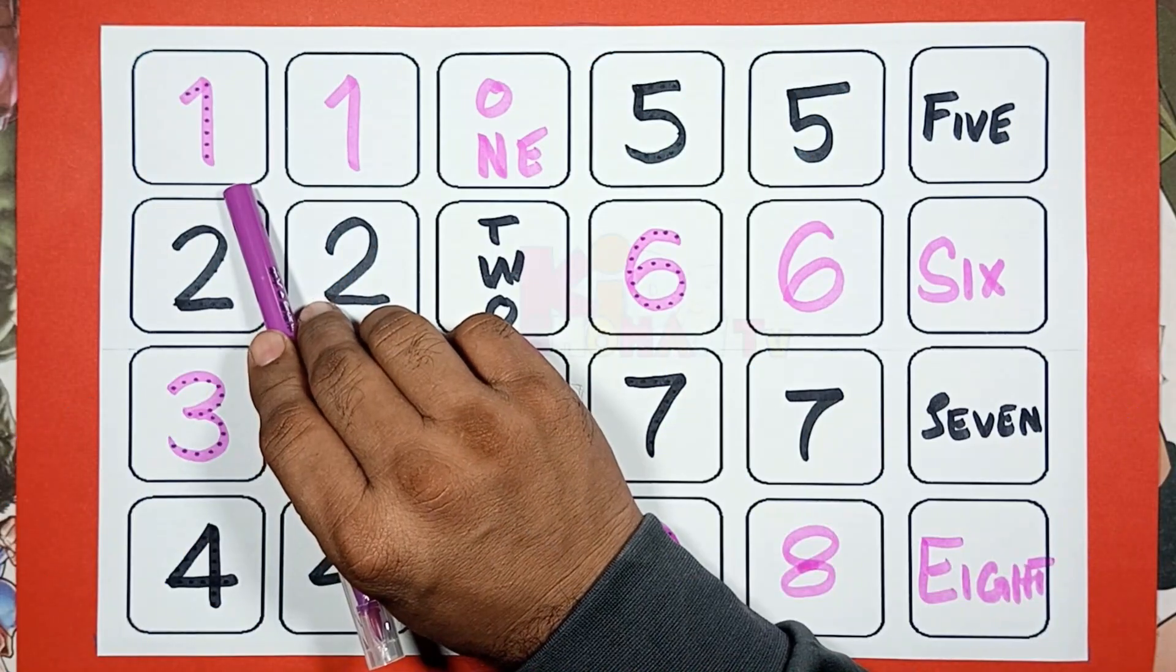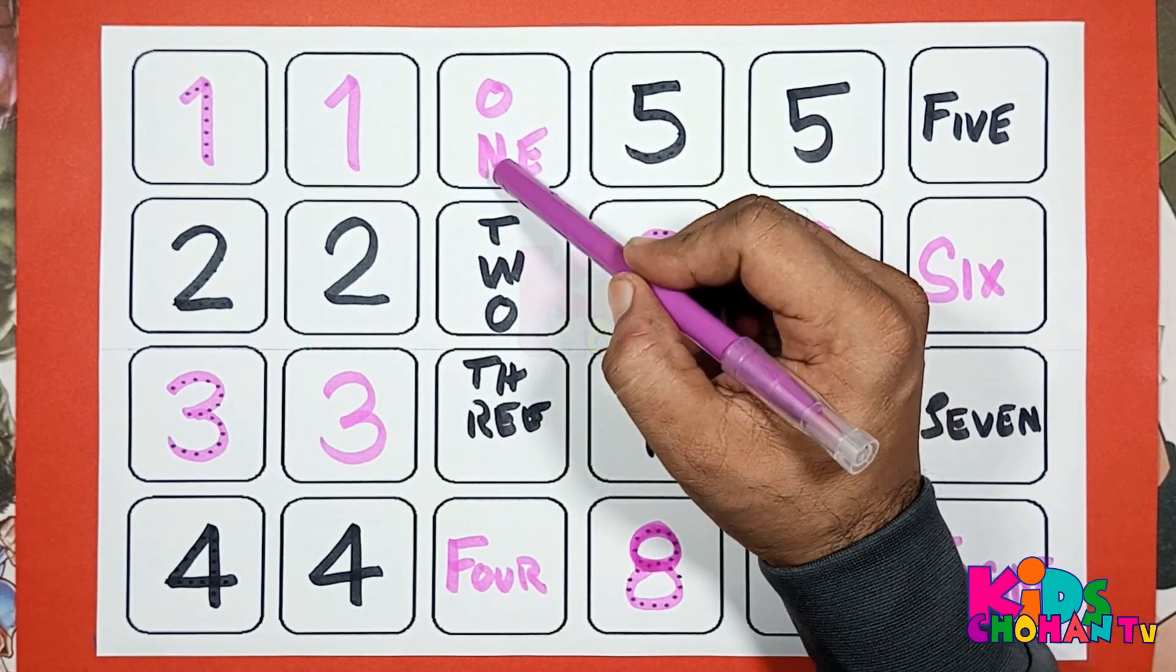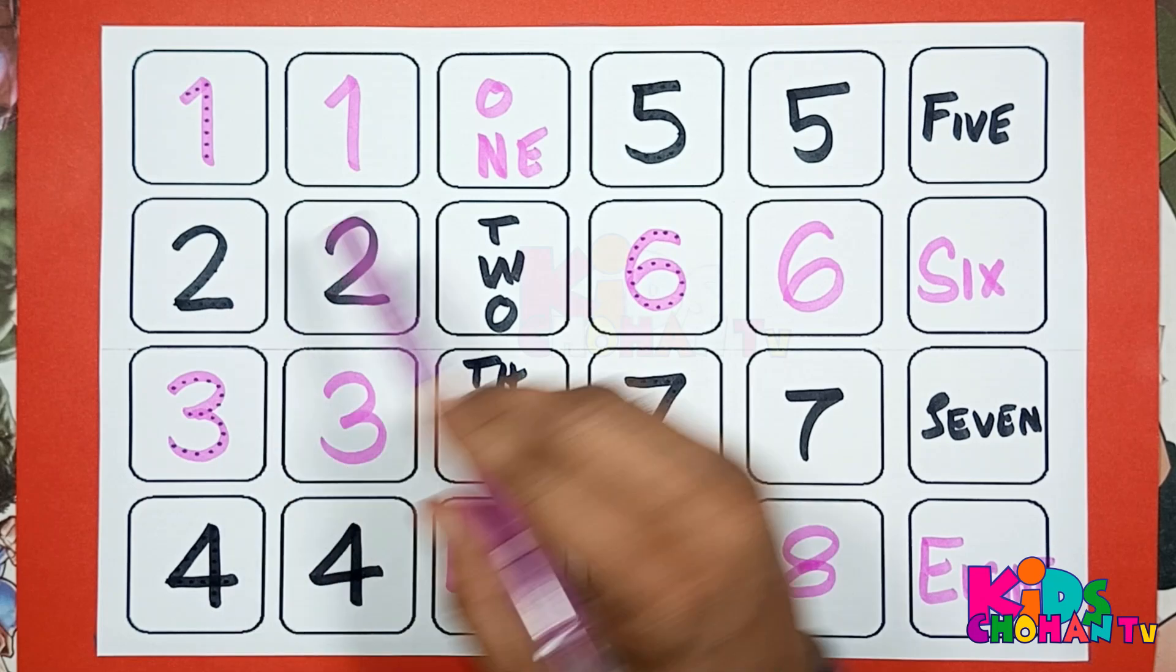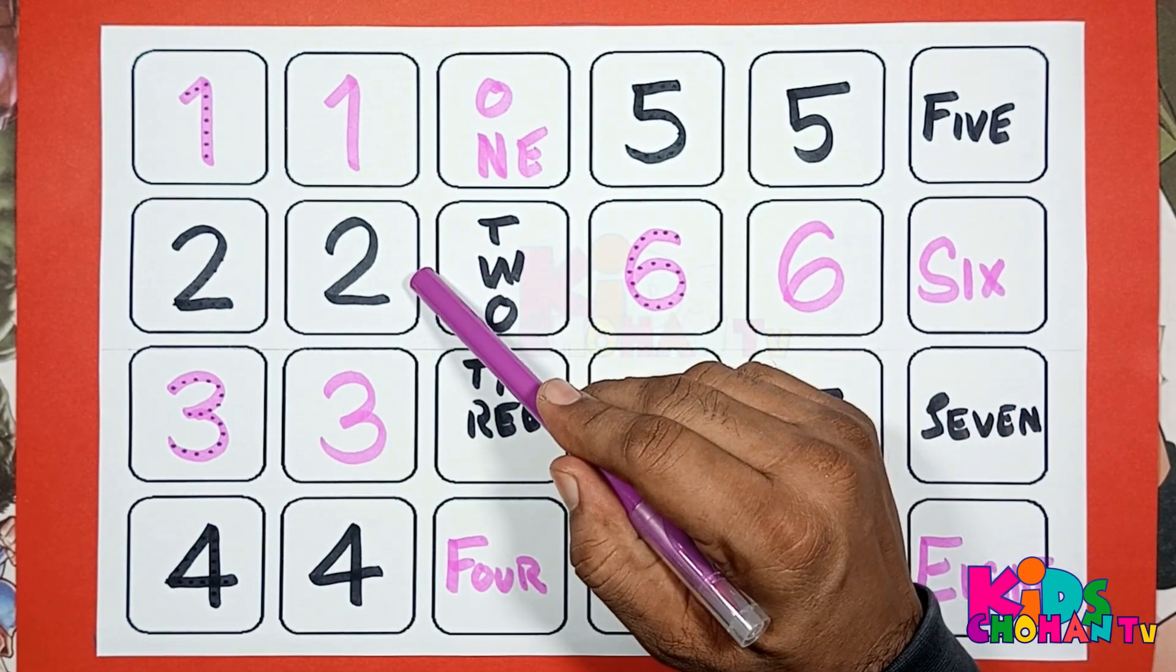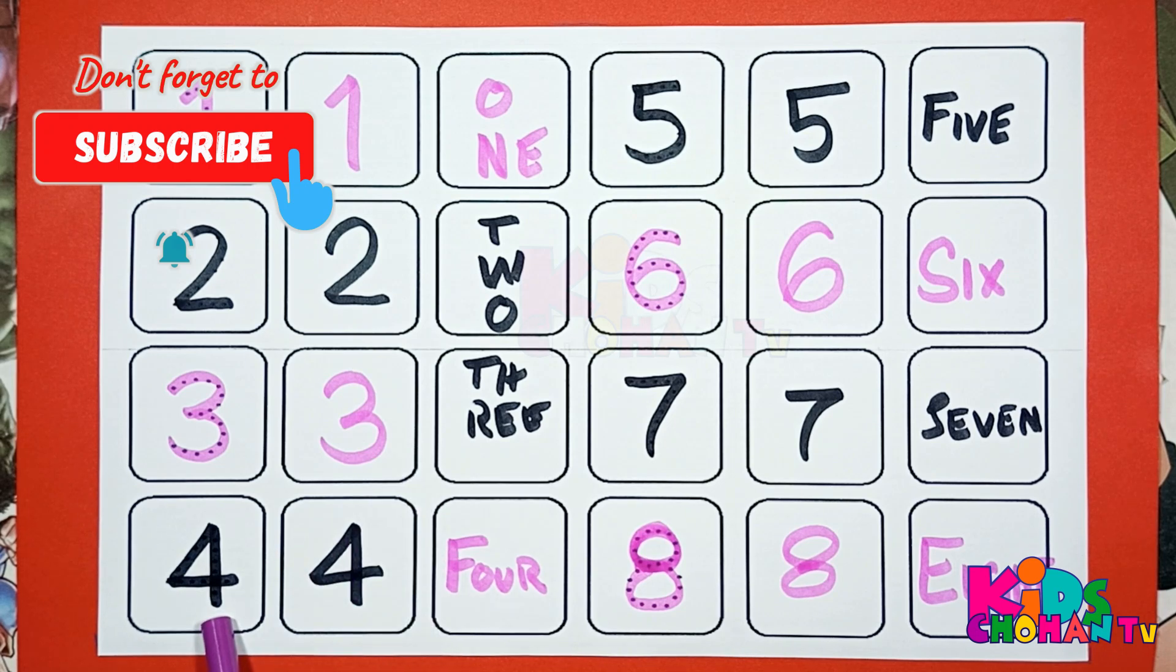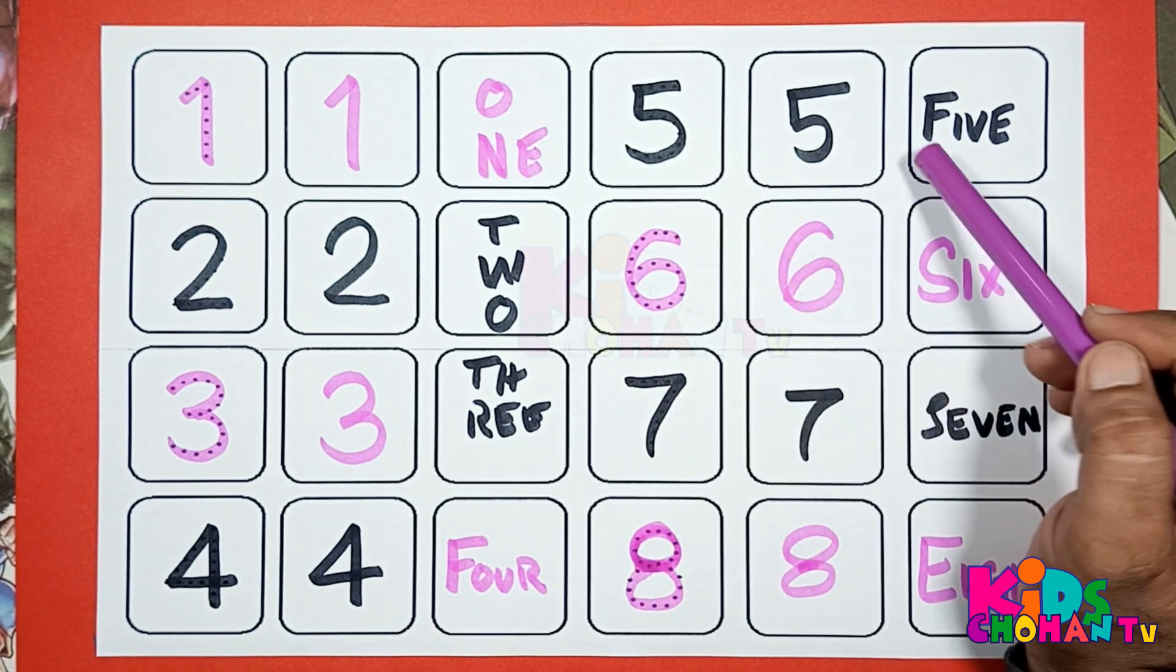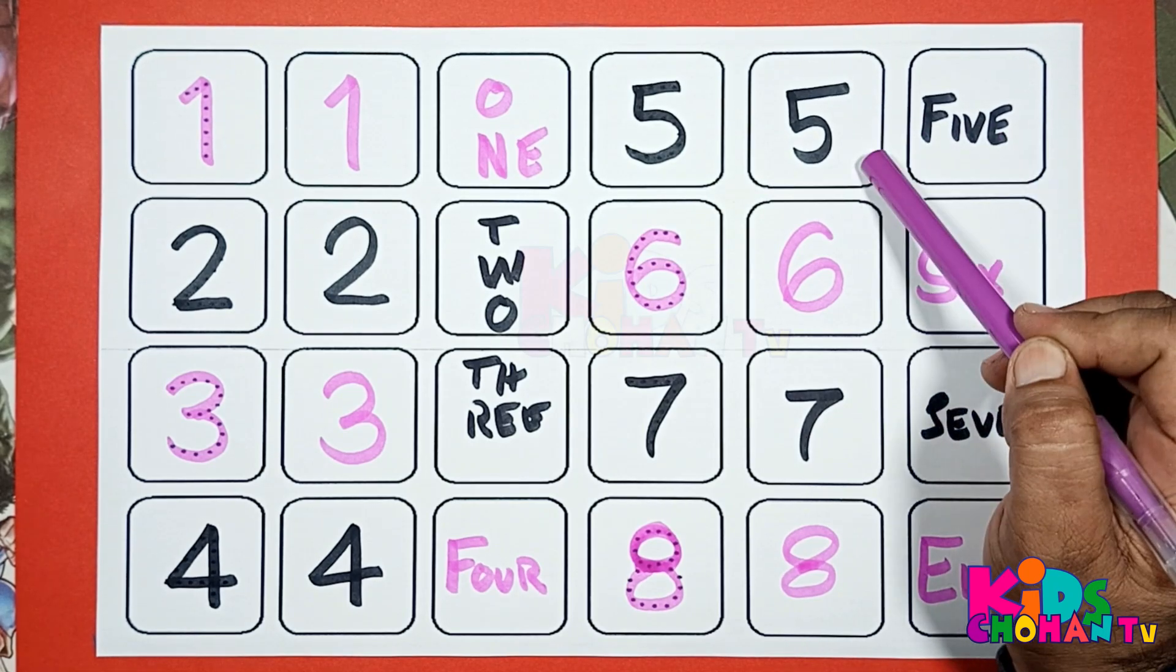Read again. 1. This is number 1. 1, O, N, E, 1. 2. T, W, O, 2. 3. T, H, R, E, E, 3. 4. F, O, U, R, 4. 5. F, I, V, E, 5.